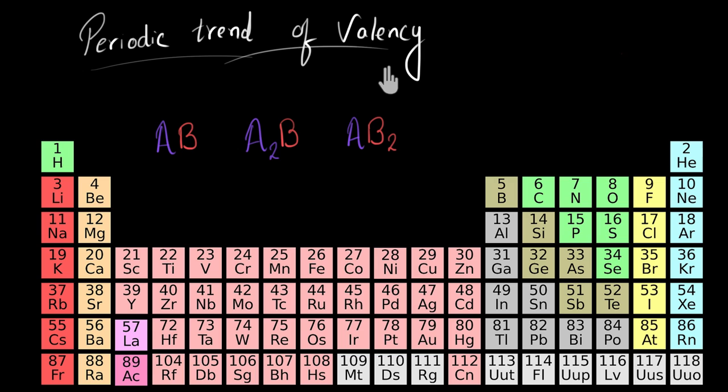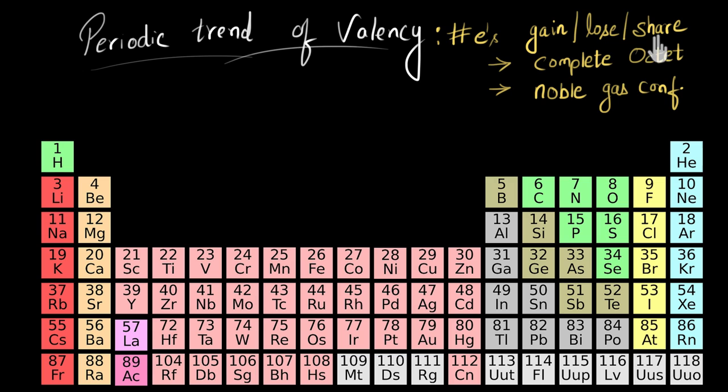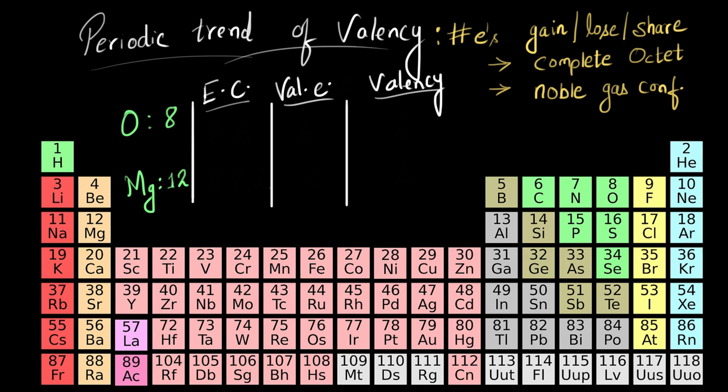First, let's recall how to calculate valency. One way to calculate valency is by counting the number of electrons an atom needs to gain, lose, or share to have a complete octet or attain the nearest noble gas configuration. Atoms react in a chemical reaction to attain the nearest noble gas configuration and become more stable. For example, let's see over here.